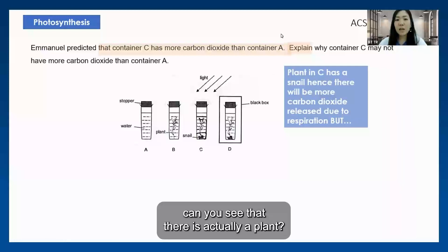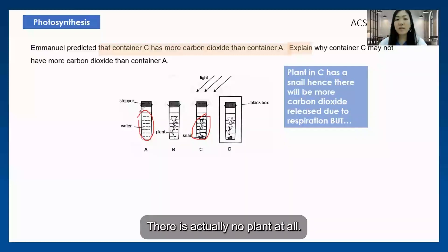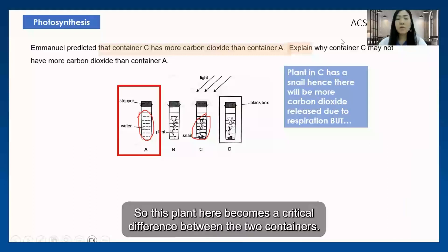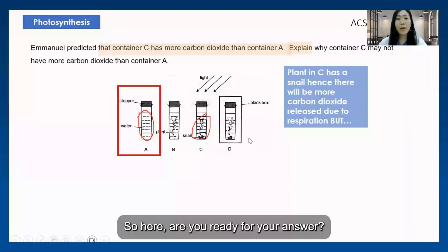But in container A, there is actually no plant at all. So this plant here becomes a critical difference between the two containers.